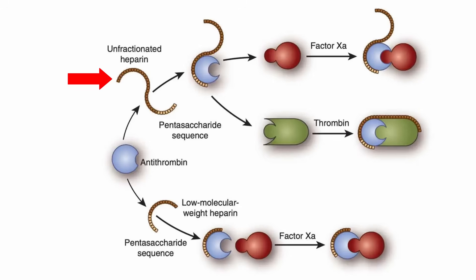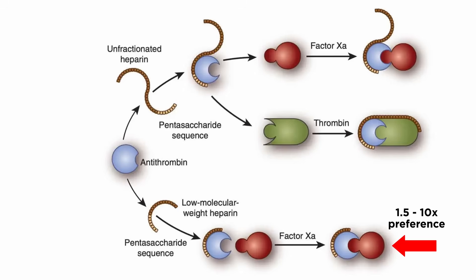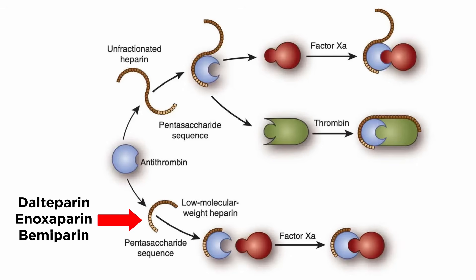In contrast to heparin, low molecular weight heparin induces a conformational change in antithrombin that preferentially breaks down factor Xa over thrombin in a range of ratios, between 1.5 times to approximately 10 times. Low molecular weight heparin is preferred in some medical situations due to its longer duration of action, meaning its dosing regimen is less frequent. Low molecular weight heparin drugs usually have the suffix -parin and include dalteparin, enoxaparin, and bemiparin as examples.